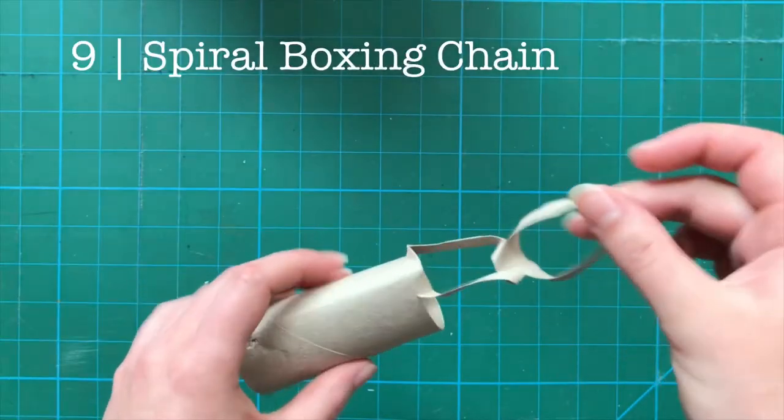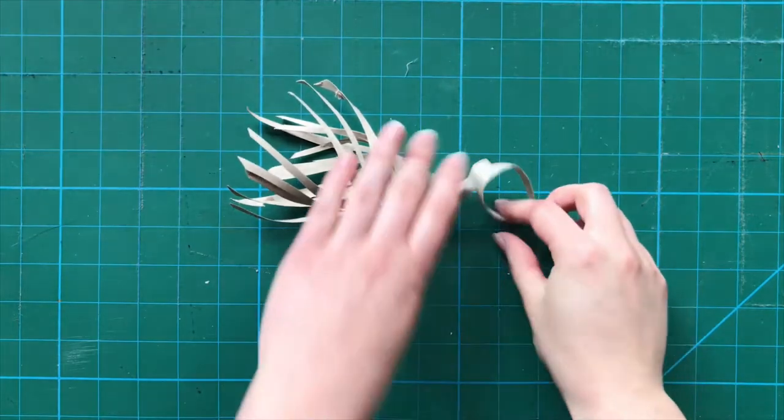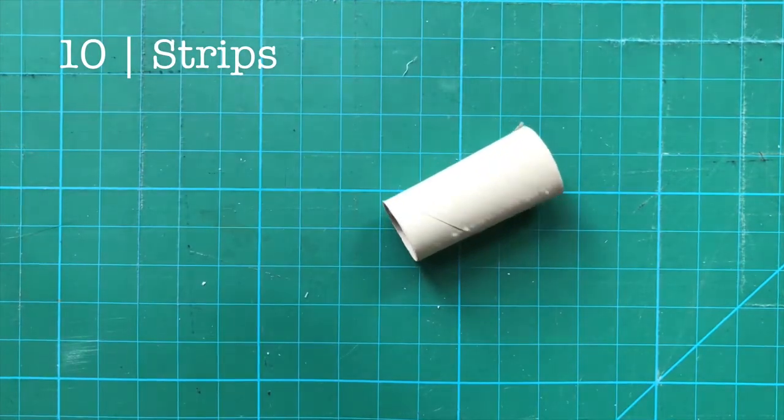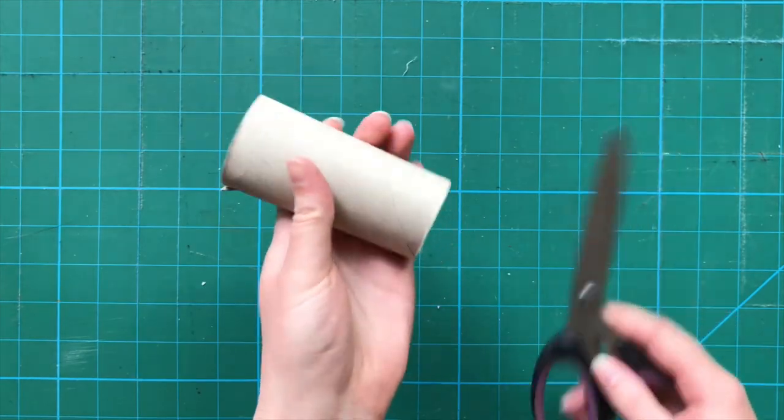Number nine, spiral box chain. You can also mix and match these different styles. For example, the spiral box chain. Number 10, strip. Starting with a fresh roll again, you're going to cut along the seam the same way we did the spiral, only this time cut all the way to the end of the roll.